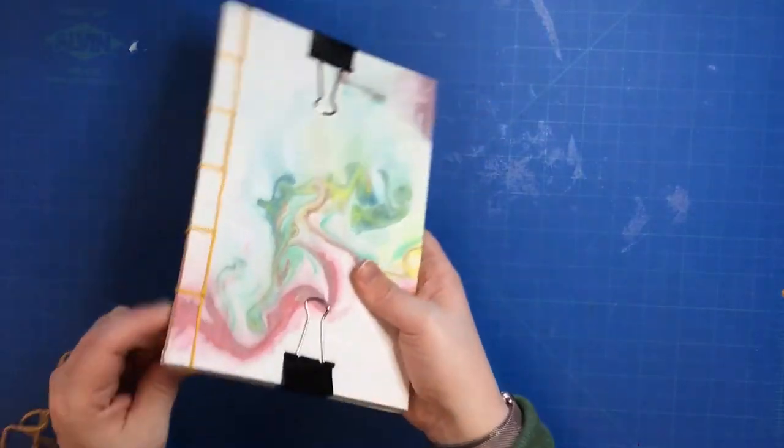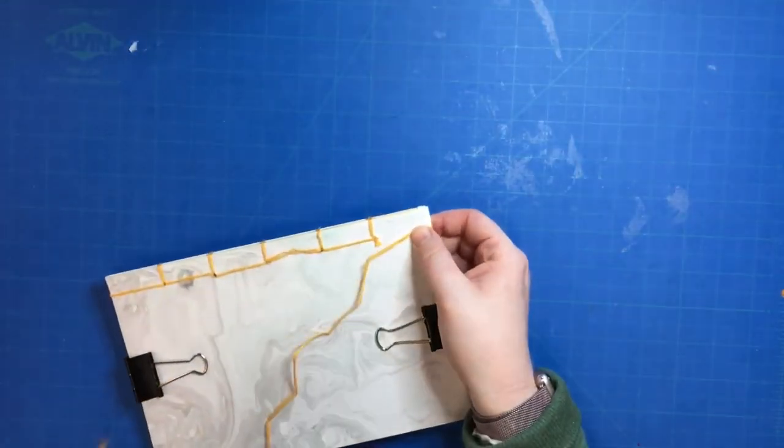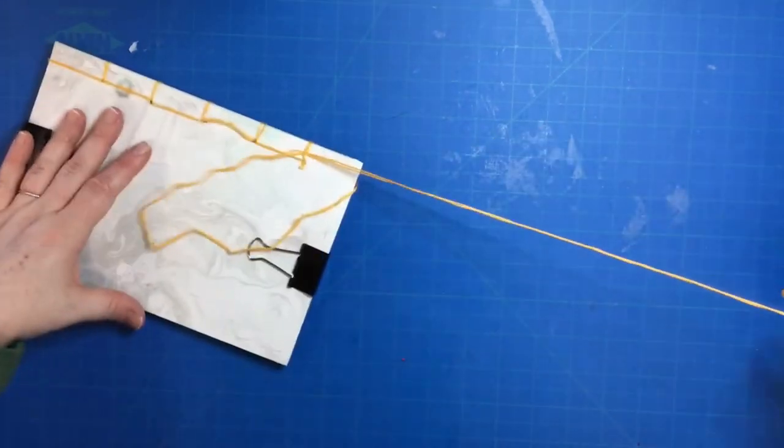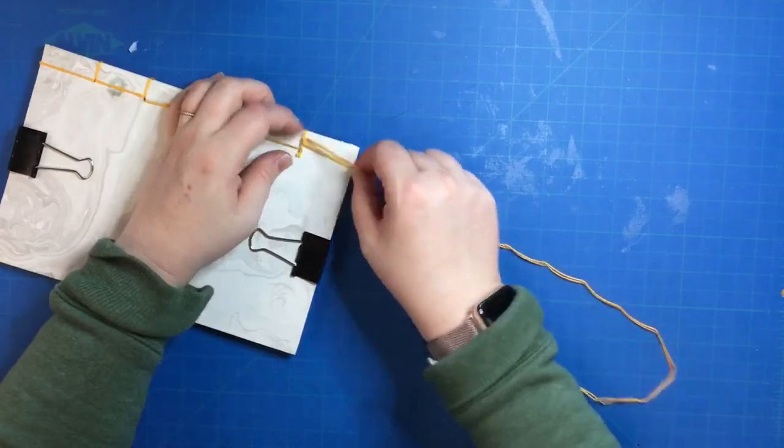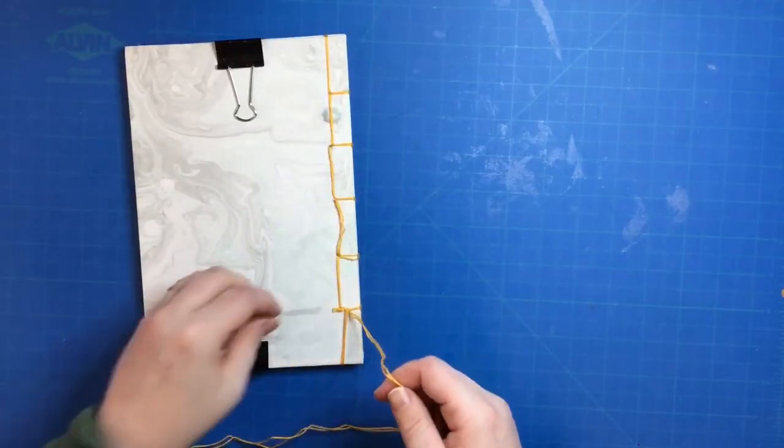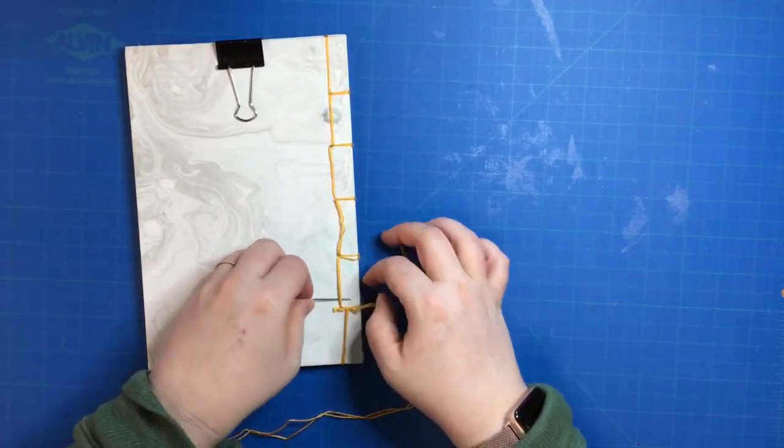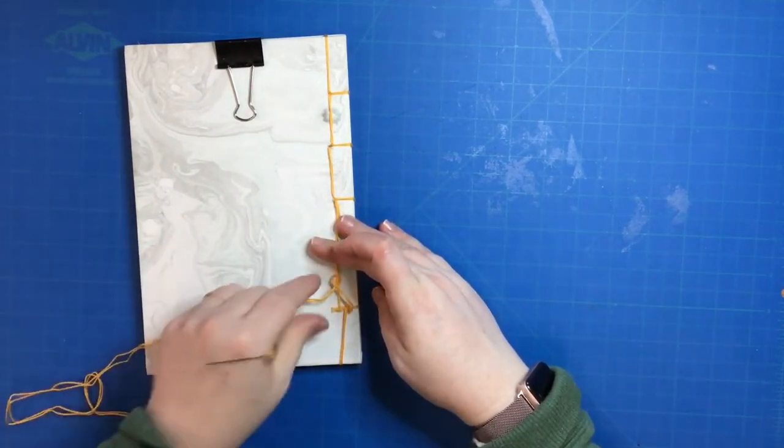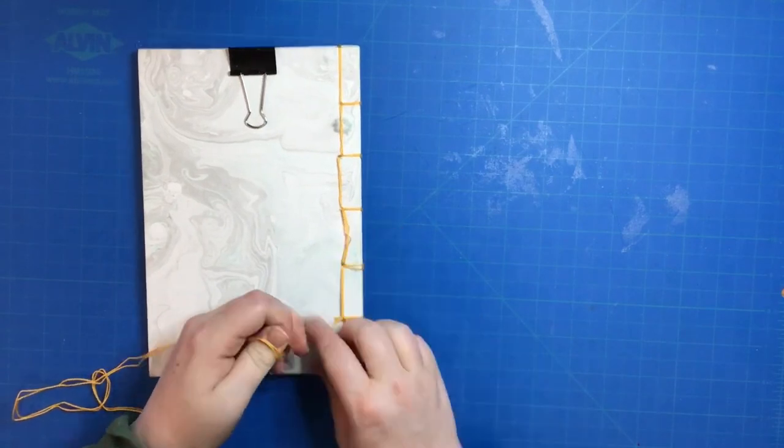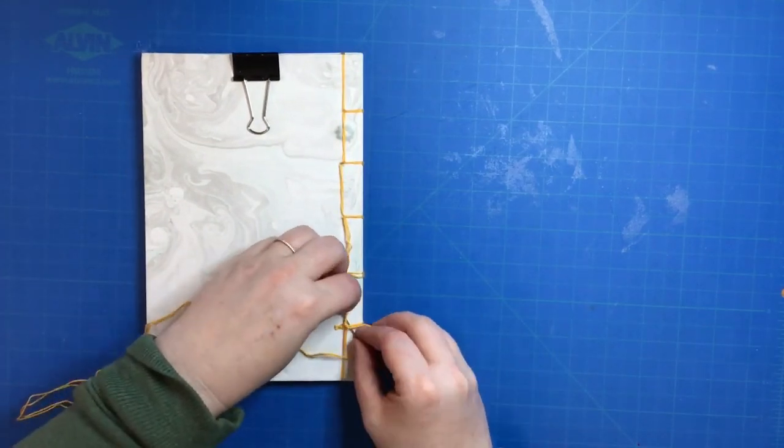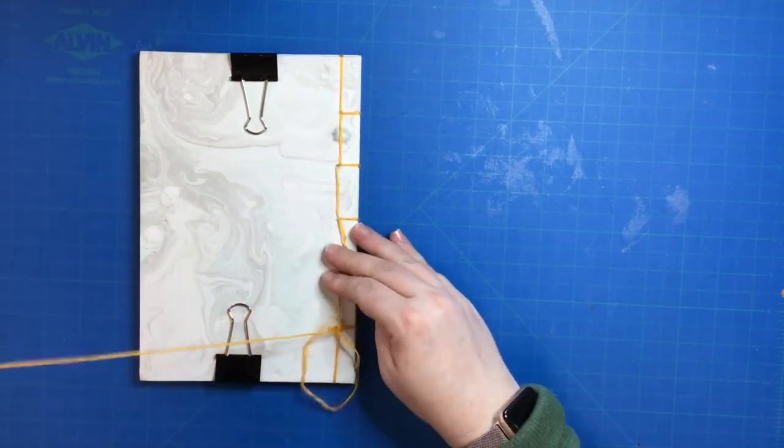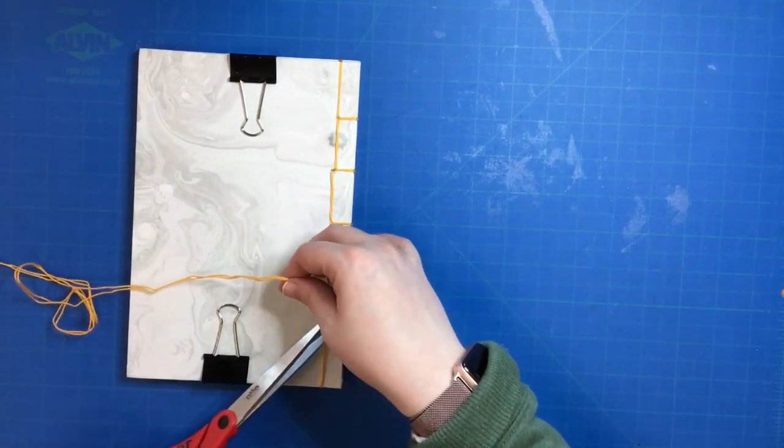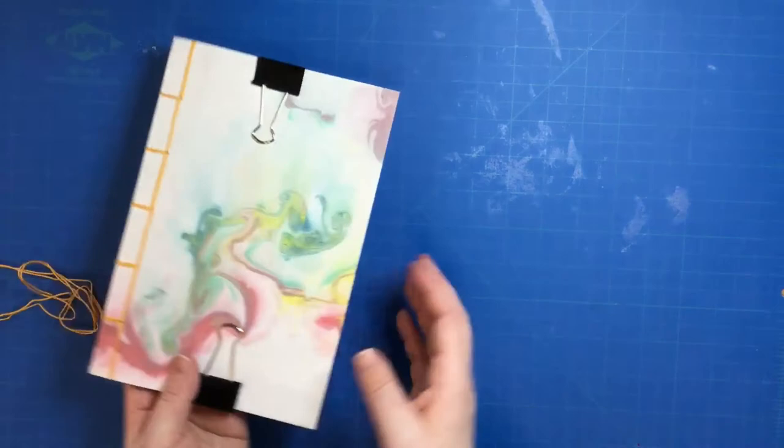Once we are at the bottom, loop around and fill in that last remaining section of missing string, then tie the knot. Loop under that string, then back over and into the string you still have, and pull tight once. Repeat that same knot to make sure it's really tight and won't fall apart during the duration of the sketchbook. Cut off the extra and you're good.